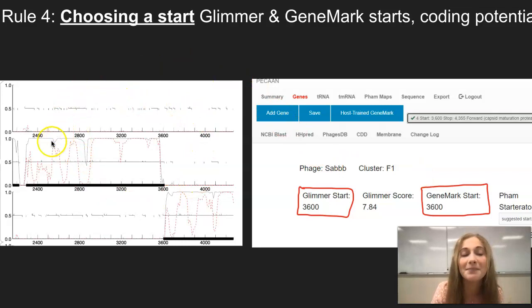All of these black numbers right here are different potential starts. And then the red dotted lines and black lines are the coding potential. As you can see, the 3,600 start right here has very high coding potential with these high red and black peaks. And with high coding potential, it is even more evidence in why we should choose that start for that gene.